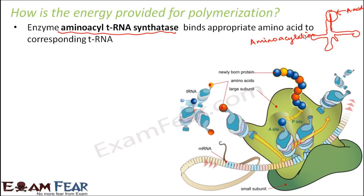This process is known as aminoacylation — the process of addition of an aminoacyl group to the tRNA. This process occurs in the presence of ATP, since bond formation needs energy. As a result, a high energy bond is formed between the amino acid and the tRNA.